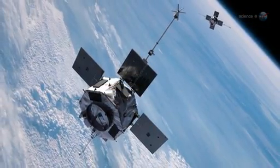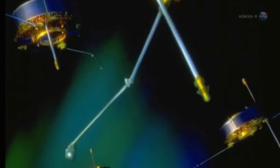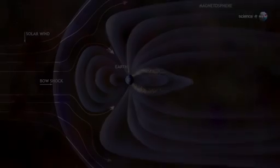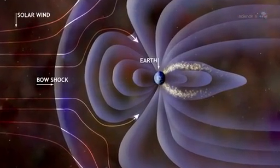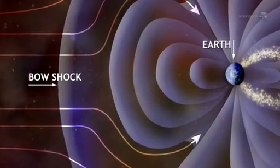Observations by NASA's THEMIS spacecraft and Europe's Cluster probes suggest that these magnetic portals open and close dozens of times each day. They're typically located a few tens of thousands of kilometers from Earth, where the geomagnetic field meets the onrushing solar wind.